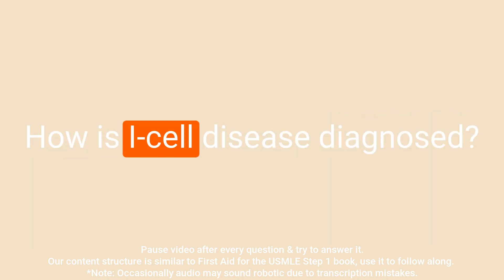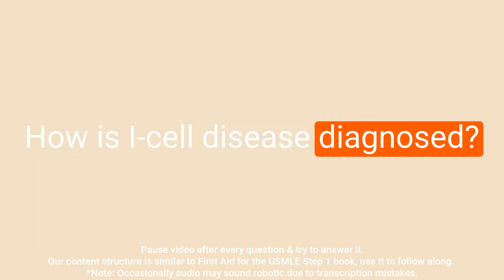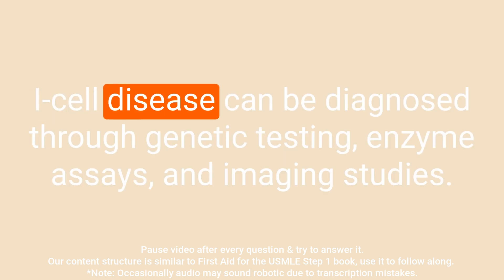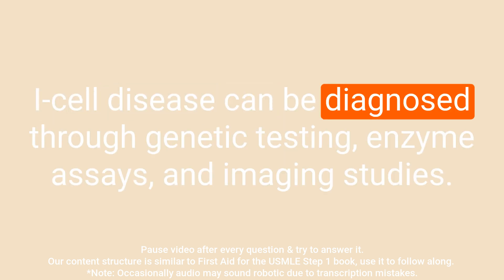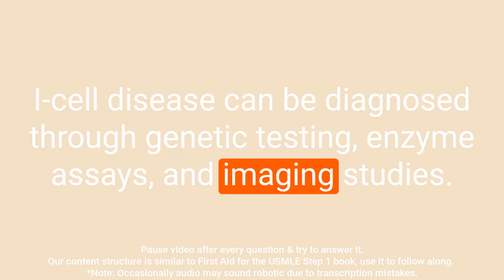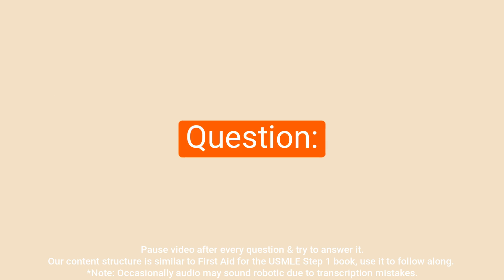Question: How is I cell disease diagnosed? Answer: I cell disease can be diagnosed through genetic testing, enzyme assays, and imaging studies.